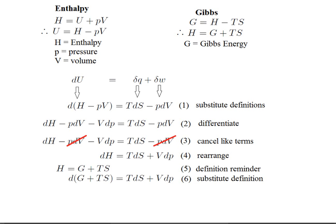In line five, I've restated the Gibbs definition because I'm about to use it. And then I'm going to substitute it in for dH so that we get the derivative of G plus TS on the left side.